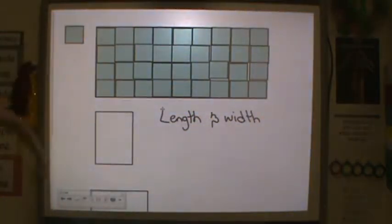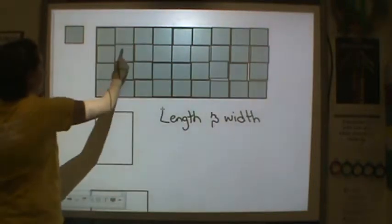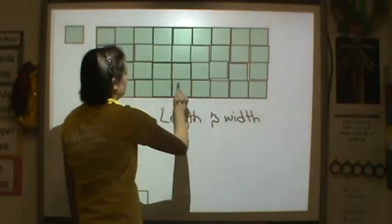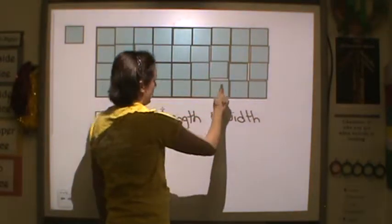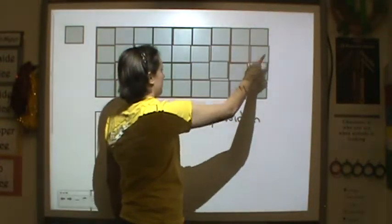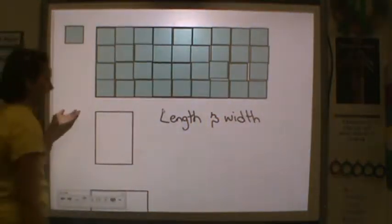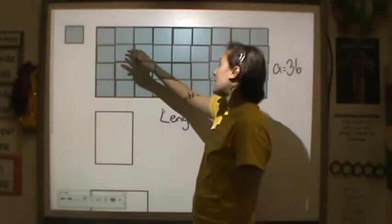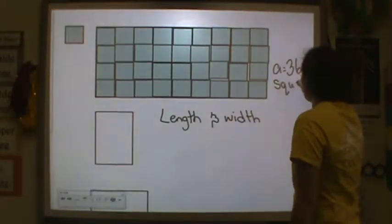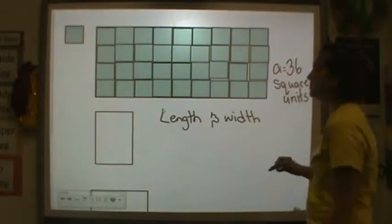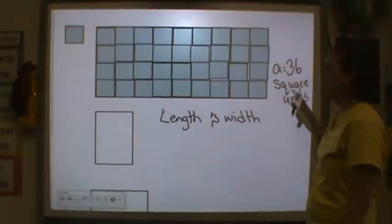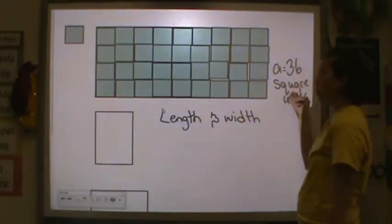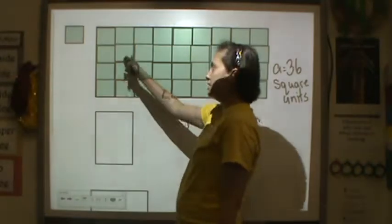So the number of squares that fit inside of here, I have 1, 2, 3, 4, 5, 6, 7, 8, 9, 10, 11, 12, 13, 14, 15, 16, 17, 18, 19, 20, 21, 22, 23, 24, 25, 26, 27, 28, 29, 30, 31, 32, 33, 34, 35, 36. So the area of this shape is equal to 36, and what did I cover it in? I covered it in square units. And that's really important. When you're doing area, we talk about square units because we're covering them in squares. We're not covering this in hearts. Okay, then it'd be 36 heart units. But we're not doing that. We're covering it in squares here.